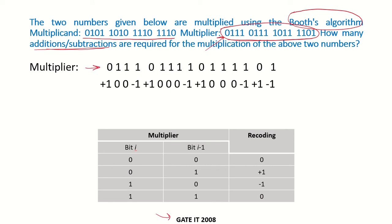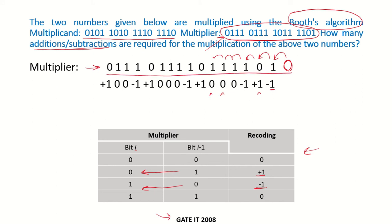This is the multiplier and this is the table we used earlier. We imagine an invisible 0 here. So 0 to 1 gives minus 1. Then 1 to 0 gives plus 1. Then 0 to 1 gives minus 1. Then 1 to 1 — no change, so 0. Again 1 to 1, so 0. Again 1 to 1, no change, so 0. Similarly we recode the complete multiplier and get the final recoded multiplier.